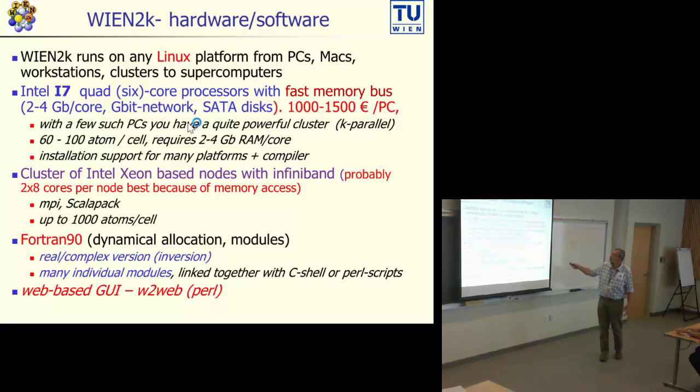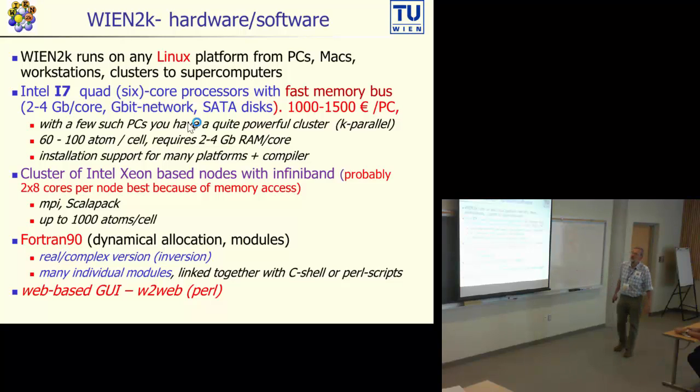Such a PC costs about 1000 to 1500 Euro per PC. With a few such PCs you have a really powerful cluster where you can do k-parallel calculations for unit cells up to 100 atoms. You should buy about 2 to 4 GB RAM per core, so in a quad-core processor at least 8 or better 16 GB RAM per processor.